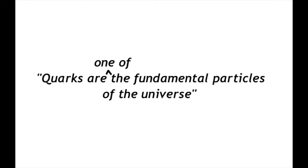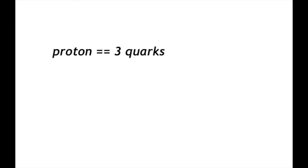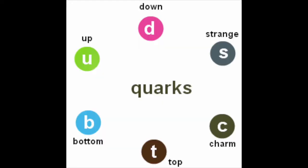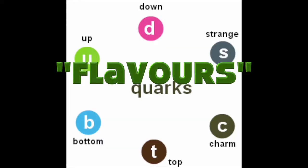Quarks are one of the fundamental particles of the universe. For example, protons are made of three quarks, and so are neutrons. There are six types, or how physicists officially call it, flavors.